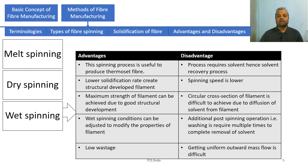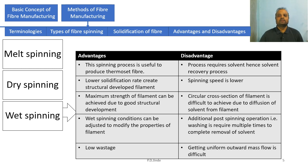The fourth advantage is wet spinning conditions can be adjusted to modify the properties of filament — parameters like concentration of coagulating bath, concentration of polymer, time, and temperature can be fine-tuned to achieve desired filament properties. The fifth advantage is low wastage, as wet spinning is a low-speed process. The disadvantages: first, the process requires a solvent and a solvent recovery process, similar to dry spinning.